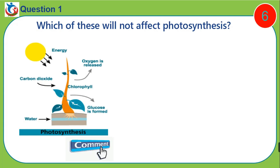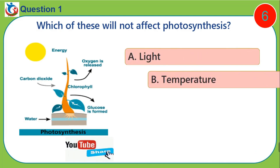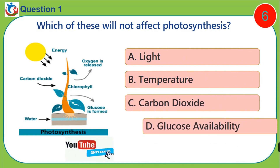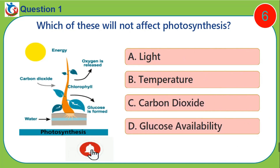Question one: Which of these will not affect photosynthesis? A) light, B) temperature, C) carbon dioxide, D) glucose availability.